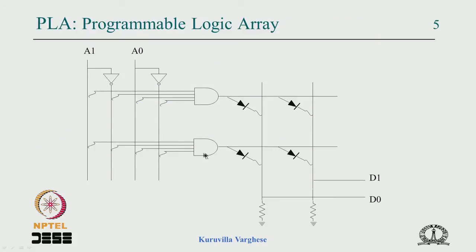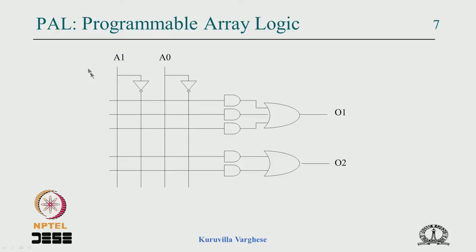This leads to a programmable AND with programmable OR, called the PLA — Programmable Logic Array. However, it turned out that if you have say 3 AND gates, you can disable one by retaining all its connections, making its output 0. So the programmable OR with its programming overhead is largely unnecessary, leading to the next evolution: the PAL — Programmable Array Logic — with programmable AND connections but a fixed number of AND gates connected to a fixed OR gate.